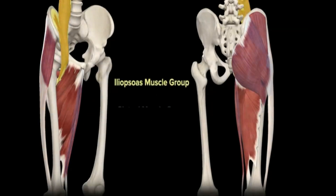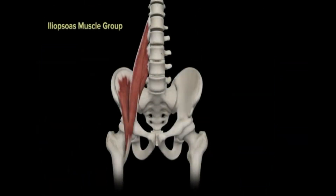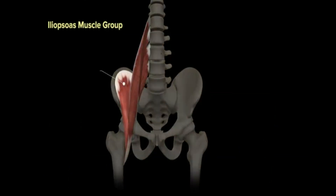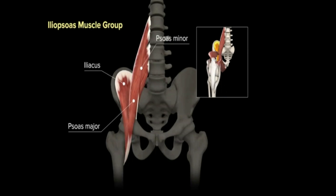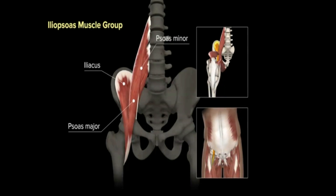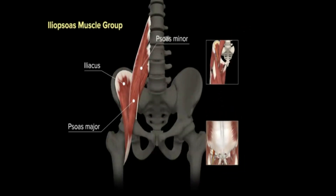The iliopsoas muscle group is comprised of the iliacus, psoas major, and psoas minor. These muscles contribute to hip function by allowing flexion of the hip or flexion of the trunk at the hip, as well as lateral flexion of the trunk through contraction of the psoas major and minor muscles and lateral rotation of the hip.